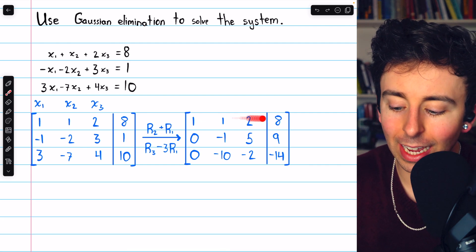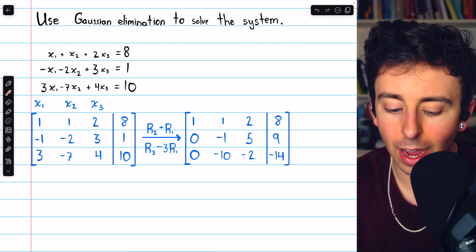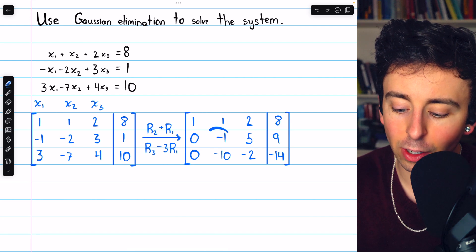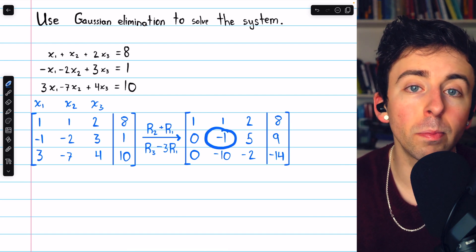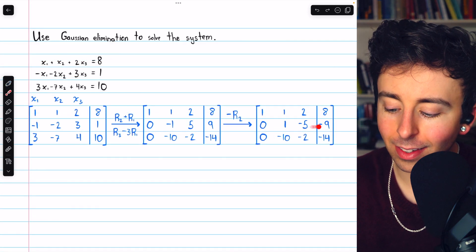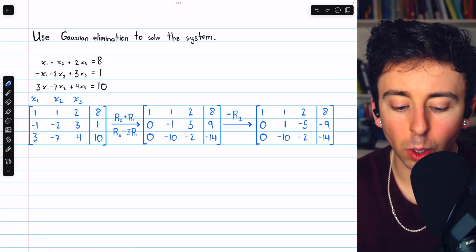Our leading entry in row one is positive one and we've got zeros below that. Now we want to change the leading entry in row two from negative one to positive one so we'll multiply row two by negative one and that gets us here just negating everything in row two.